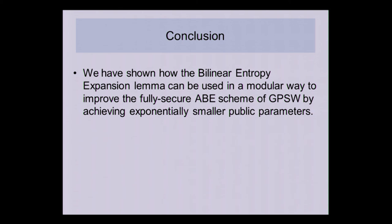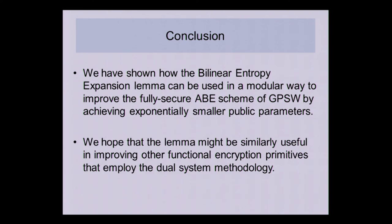I've shown how this bilinear entropy expansion lemma can be used in a modular way to improve the fully secure ABE scheme of GPSW and achieve exponentially smaller public parameters. Because of this modularity — how it plugs into one part and changes things to a point where the rest of the proof follows through — we're hoping it might be similarly useful in improving other functional encryption primitives that use the dual system methodology. If anybody has ideas, I'm definitely interested in hearing them.